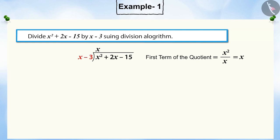Now, multiply the divisor by this quotient and write it below the dividend. Then subtract the term written below from the dividend so that the remainder is 5x minus 15, which becomes the new dividend for further processing.